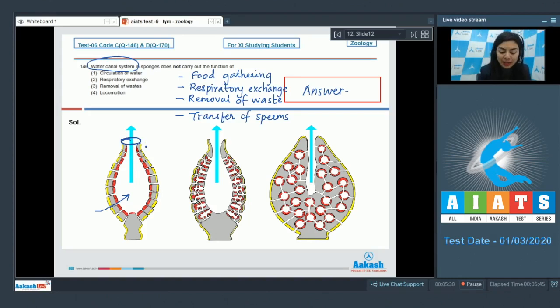This system of water canals helps in circulation of water, respiratory exchange, and removal of waste, but not in locomotion. The sponges are sessile, meaning they are fixed to one place and cannot move. Thus, it does not help in locomotion. The correct answer here is option number four.